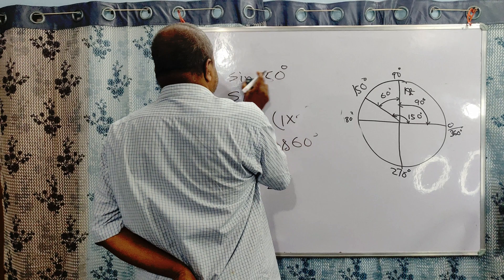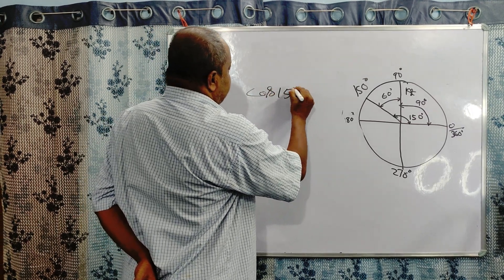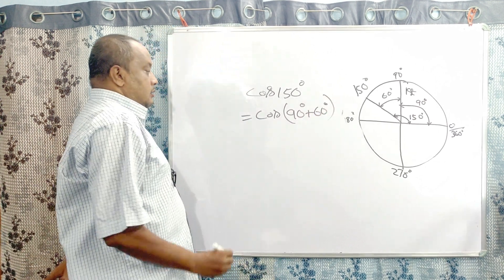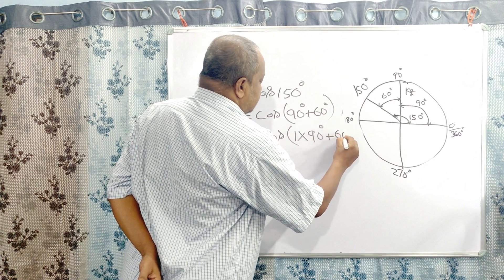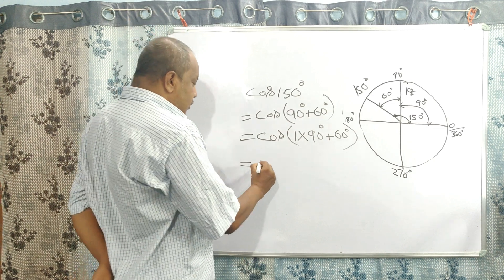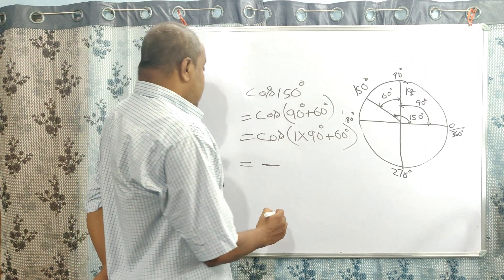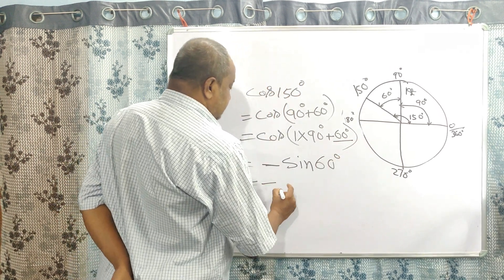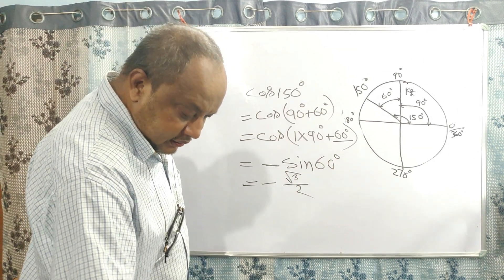Now taking the cos value. cos(150°) = cos(90° + 60°). We can write this as cos(1×90° + 60°). As this angle is in the second quadrant, the value of cos is negative. So a minus sign comes, and since 1 is an odd number, cos is converted to sin and the angle is 60 degrees. So minus sin(60°) = minus √3/2.